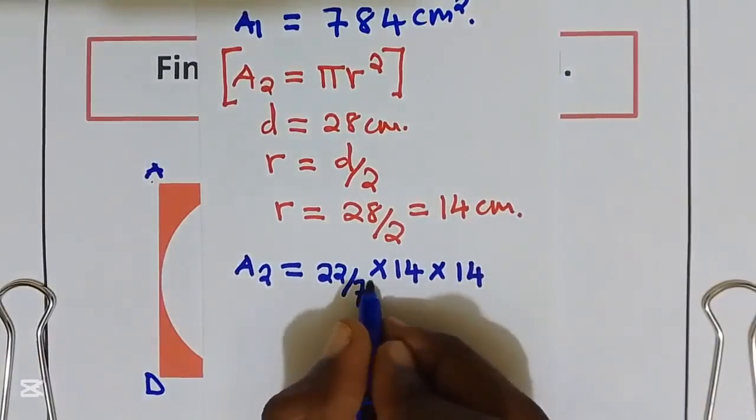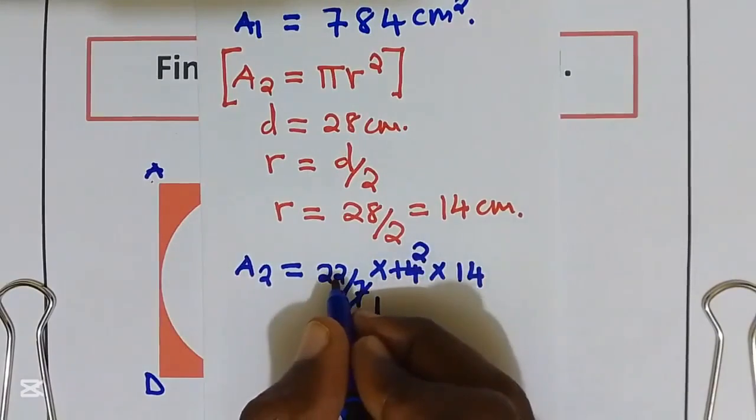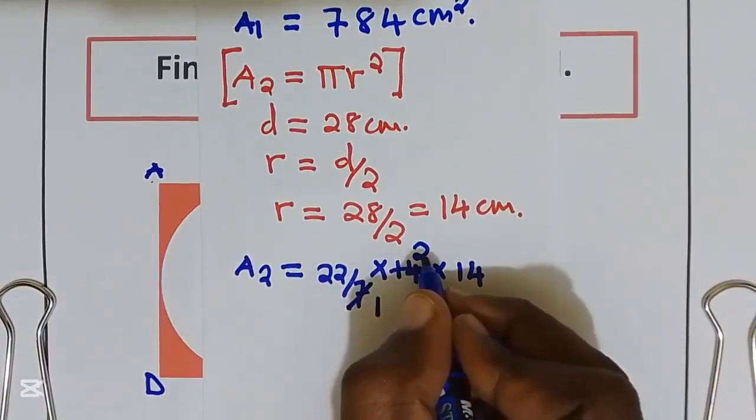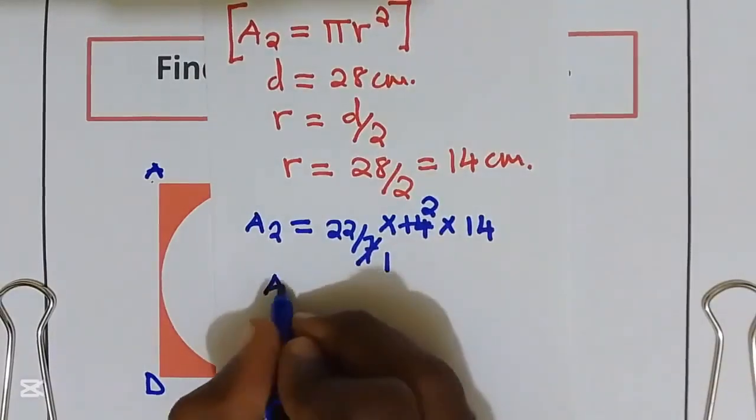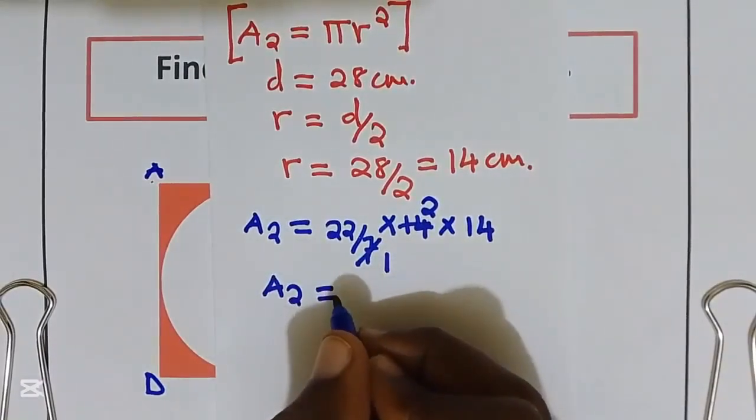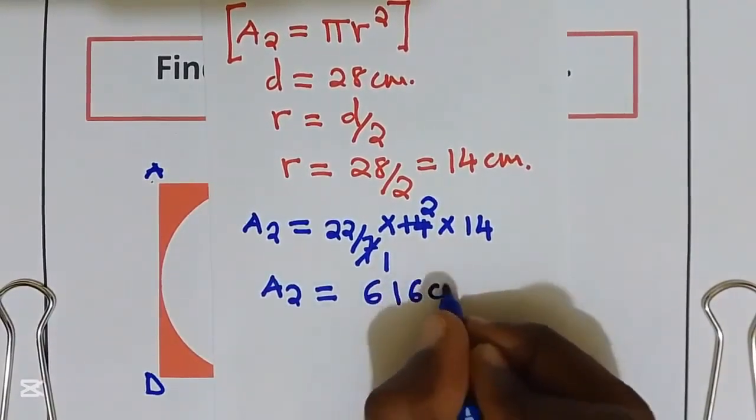I can simplify here. By 7, 1 by 7 it is 2. 22 multiply by 2 is 44. 44 multiply by 14. We get area 2 is equal to 616 cm square.